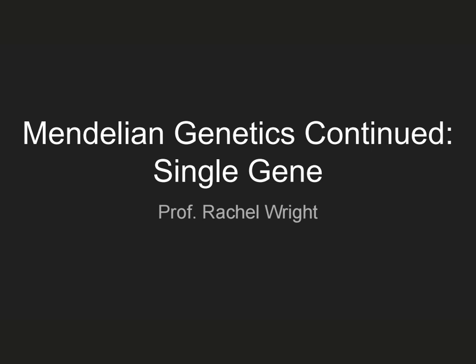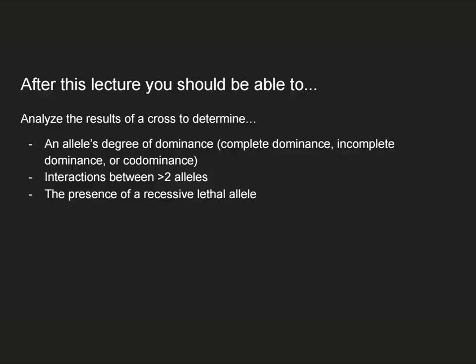Hi, this week we're still talking about Mendelian genetics and we're still talking about things that happen when you have a single gene controlling a trait, but we're going to talk about some more possibilities of outcomes that we can see from a cross. So after today, you should be able to analyze the results of a cross to determine the degree of dominance that an allele shows, if you are observing interactions between more than two alleles of a single gene, and notice if there is a recessive lethal allele present.